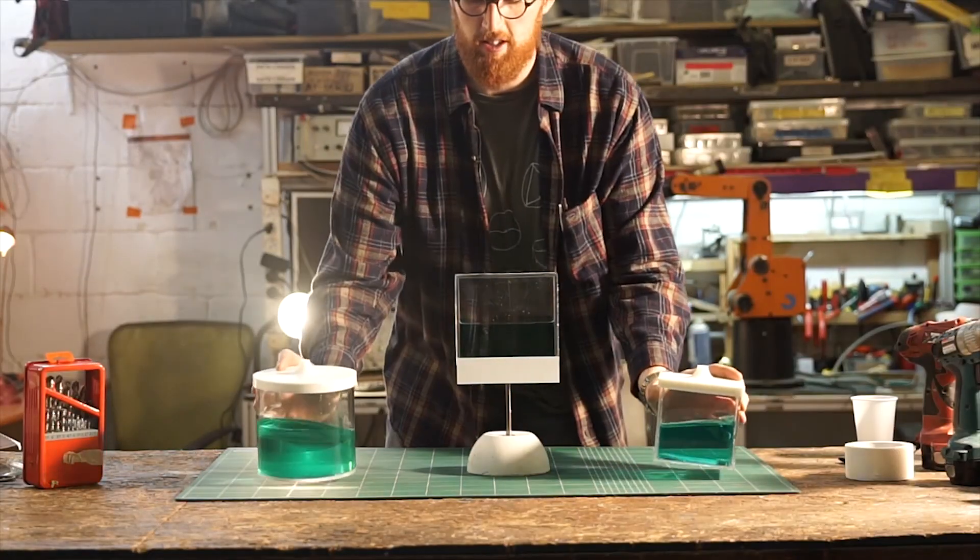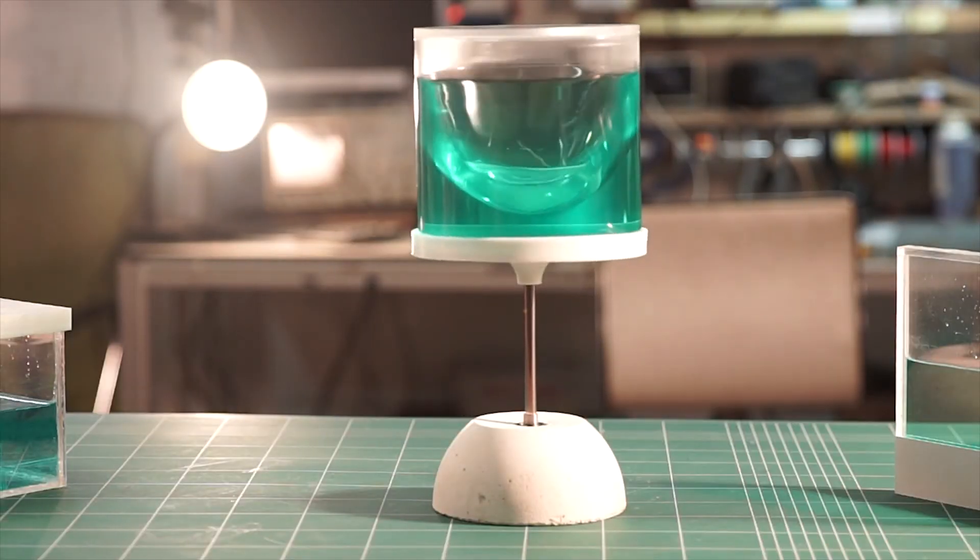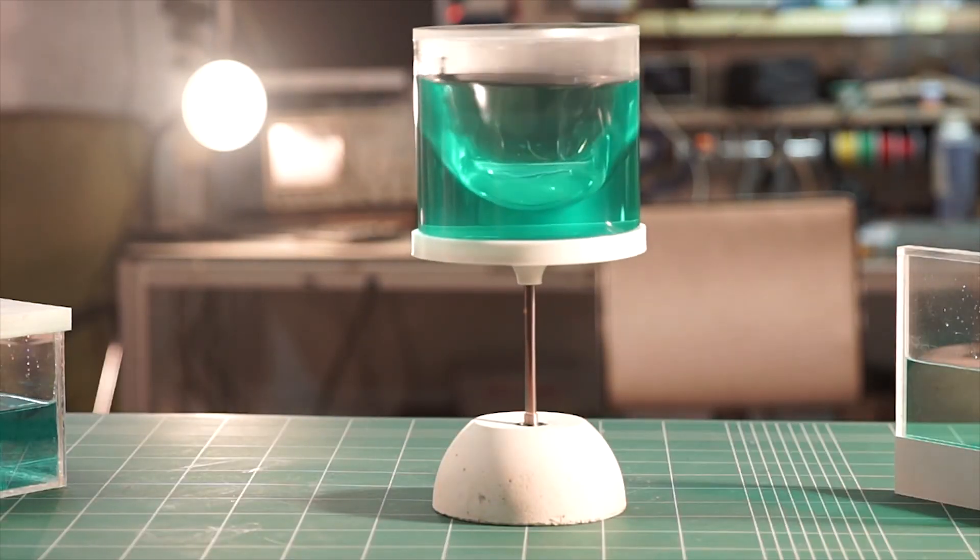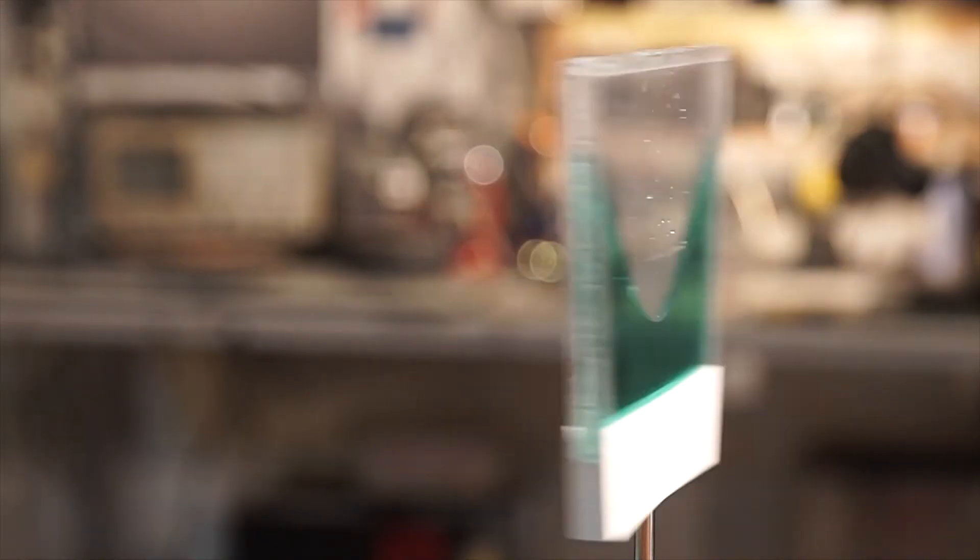Off camera, I made two more water tanks. The water level in these tanks reveals the full 3D surface created by the rotating liquid. The cylinder gives a very clear view of this surface. My original tank simply displays a cross-section of it.